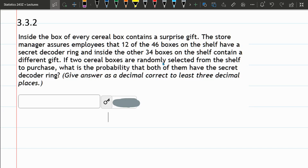So here we have boxes of cereal containing gifts. The store manager assures employees that 12 of the 46 boxes have a secret decoder ring, and the other 34 contain a different gift. Two cereal boxes are chosen. What's the probability that both have a secret decoder ring?